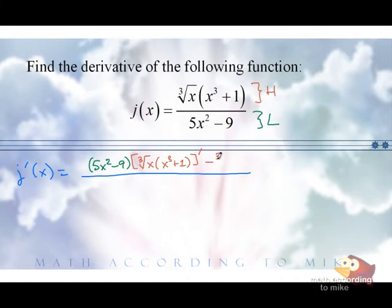Minus high times the derivative of low. Again, just a prime. All over low squared.